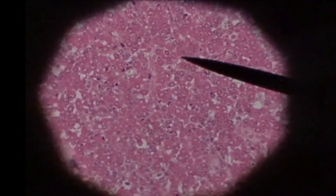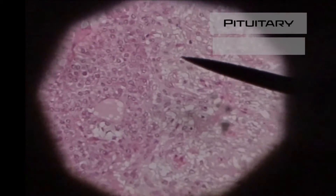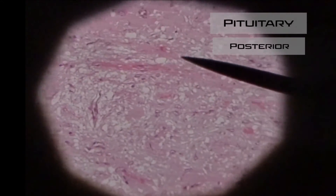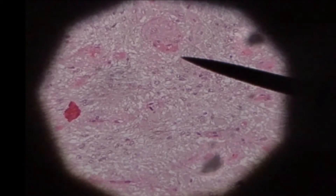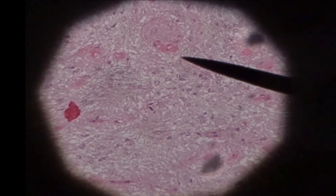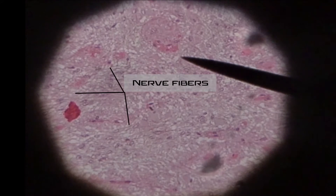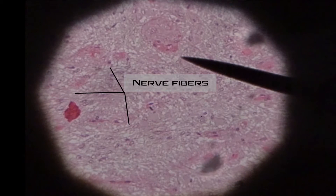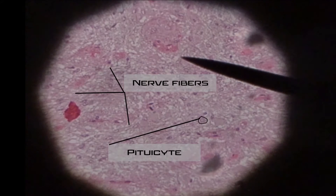Next, we're going to look at the posterior pituitary. This portion has a more direct connection to your hypothalamus. In here you're going to see a lot of the nerve fibers of neurons from your hypothalamus that travel down into this part of the pituitary gland. You should also be able to see the pituicytes, which are the cells that house the hormones that the hypothalamus has made.